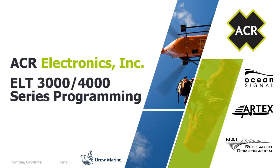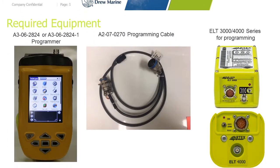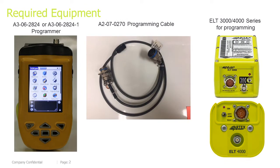Welcome to the ELT3000-4000 series programming module. Required equipment: you will need a programmer, part number A3-06-2824 or part number A3-06-2824-1, a programming cable A2-07-0270, and an ELT3000 or ELT4000 for programming.